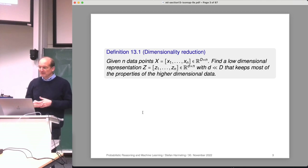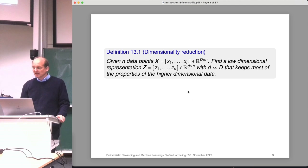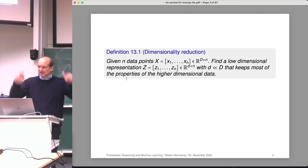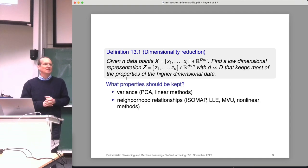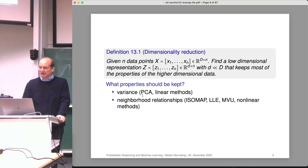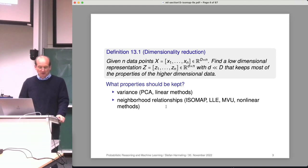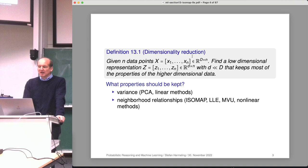Let's recall the problem of dimensionality reduction. Given some data set x1 to xn, the goal is to find a low-dimensional representation z1 to zn in some lower-dimensional space that keeps most of the properties of the higher-dimensional data. Properties that are interesting include variance — the spread of the data — which typically leads to linear methods. Today we look at different methods which try to keep the neighborhood relationships: if a point is close by to another point, that should also be the case in the low dimensions.